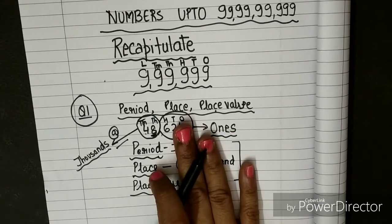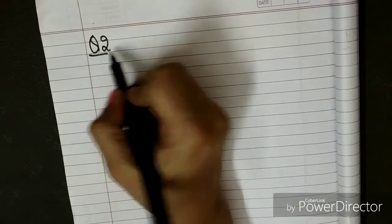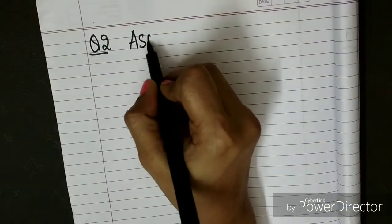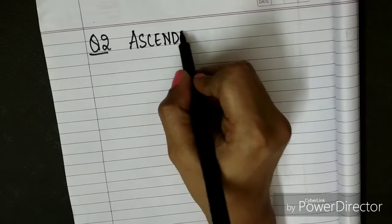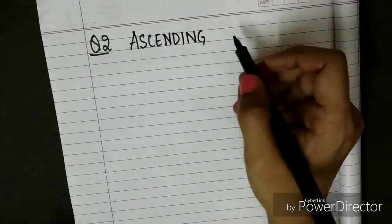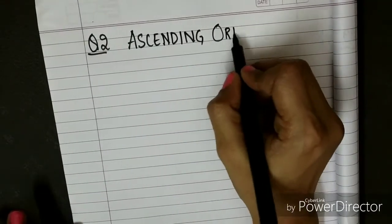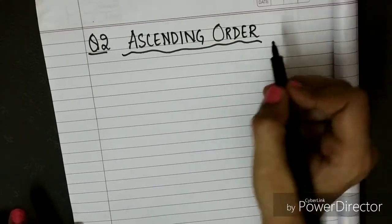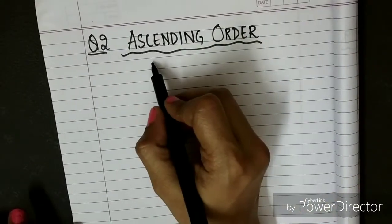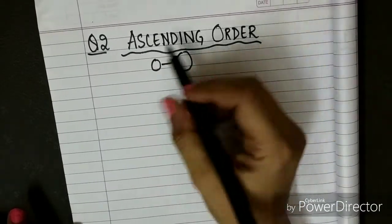Now I am going to do question number 2: ascending order. Ascending order is a concept we have done in Class 3 and Class 4, and now in Class 5 we are going to revise it again. It is a very important concept and also easy. Ascending order means arranging from smallest to biggest.